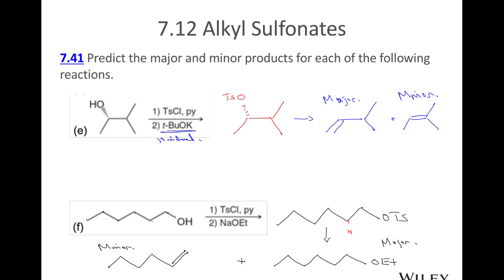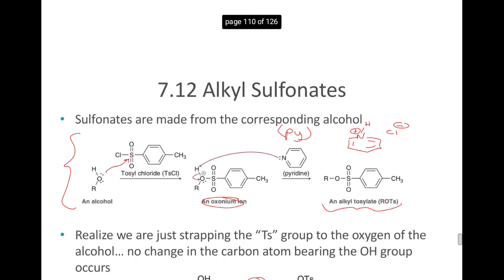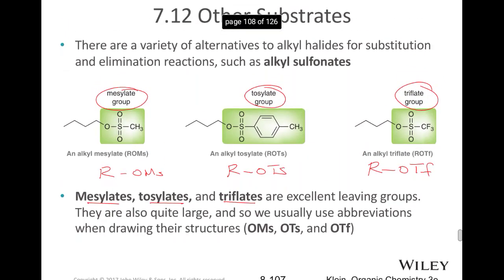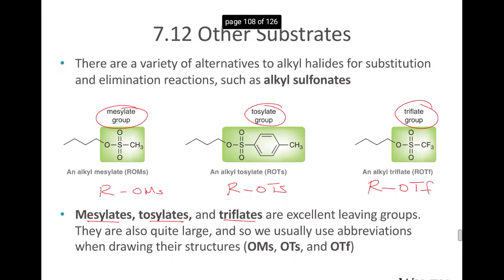In summary, alkyl sulfonates — the three we look at in this class are the mesylate, the tosylate, and the triflate — will come up over and over again. You should be familiar with all of these, and you can treat them just like you have an alkyl halide.